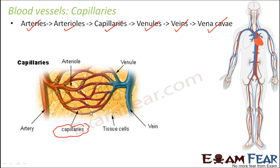Valves are present in veins so that deoxygenated blood does not flow in the opposite direction, preventing mixing of oxygenated and deoxygenated blood. This picture shows that both arteries and veins branch out to form very thin blood vessels called capillaries.